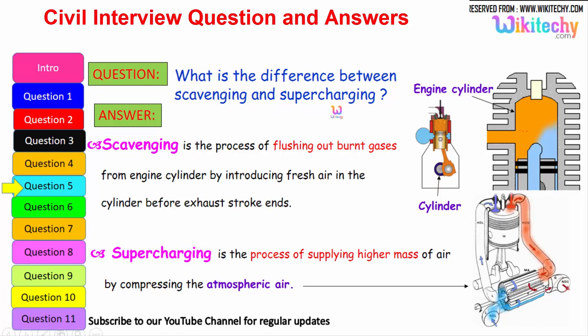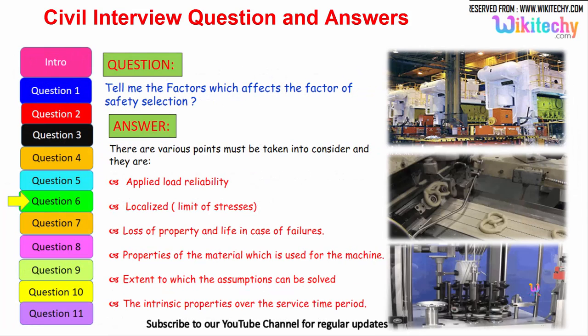Let us move to the different question. What is the difference between scavenging and supercharging? So scavenging is the process of flushing out the burnt gases from the engine cylinder by introducing the fresh air in the cylinder before the exhaust stroke ends. That is scavenging. Whereas supercharging is the process of supplying high end masses of air by compressing the atmospheric pressure. That is referred to as supercharging. You are able to see a high pressure of air is injected into the cylinder to compress the atmospheric air.